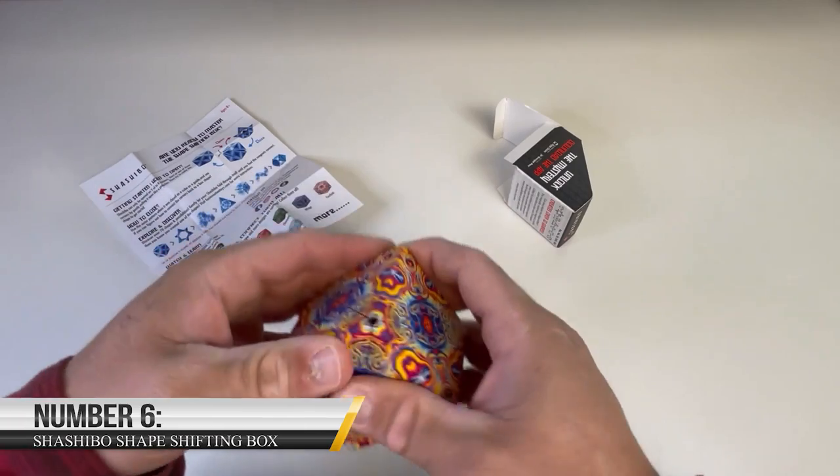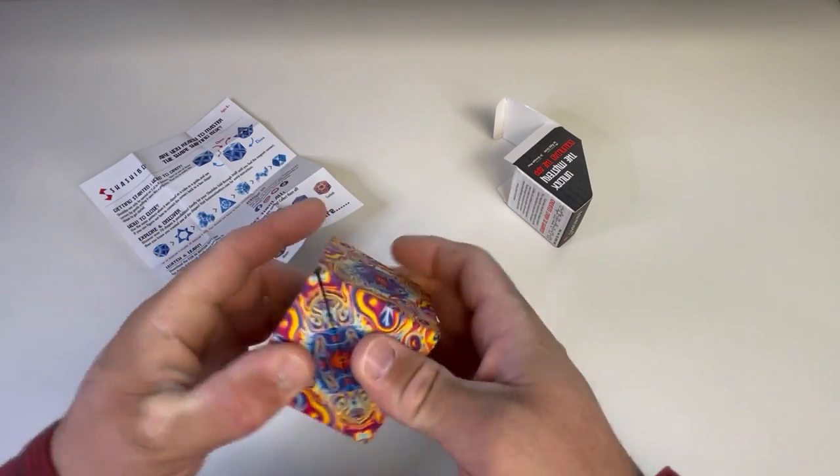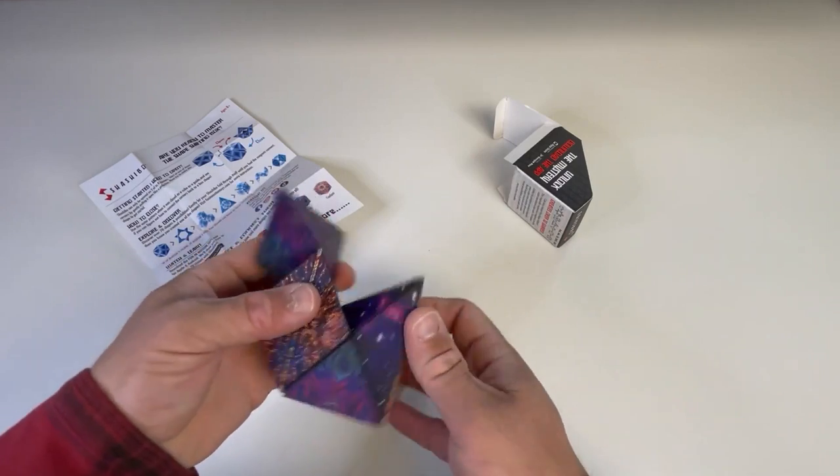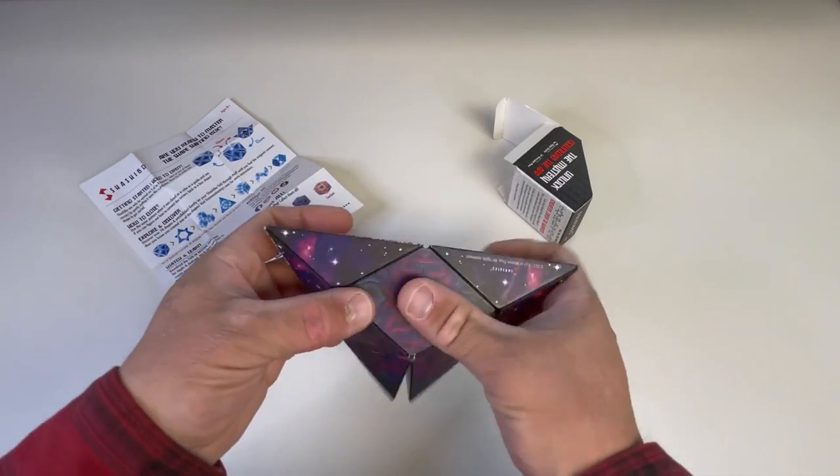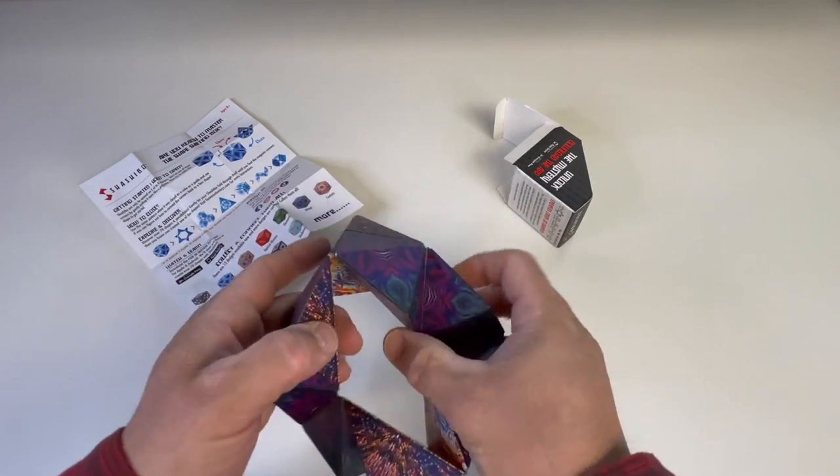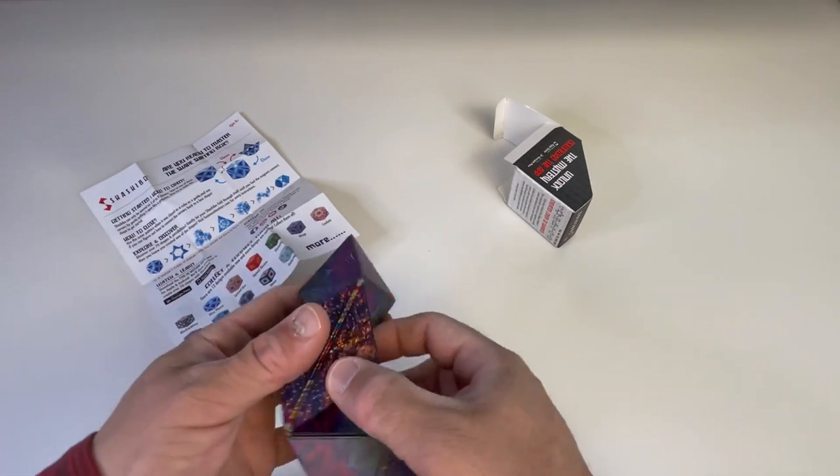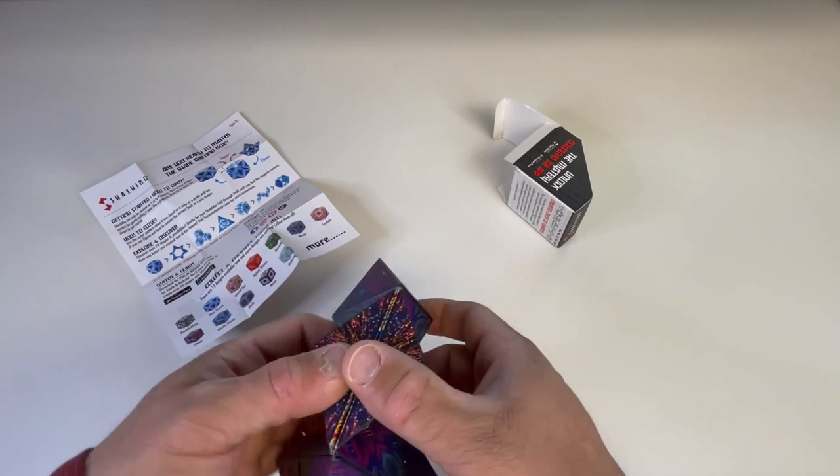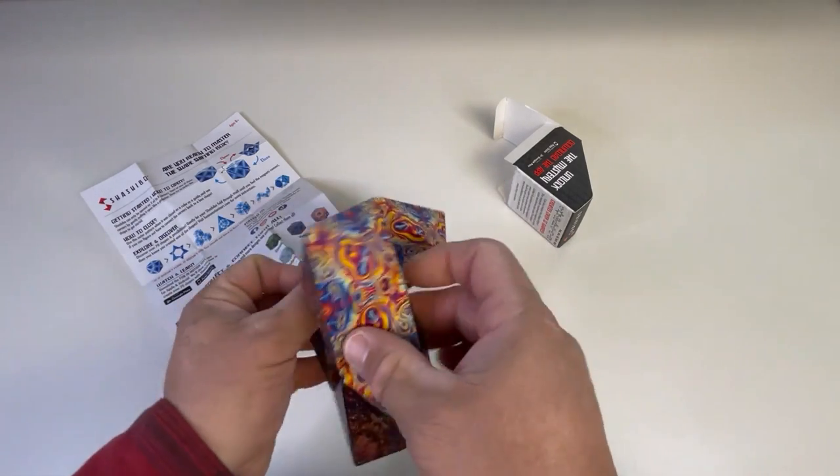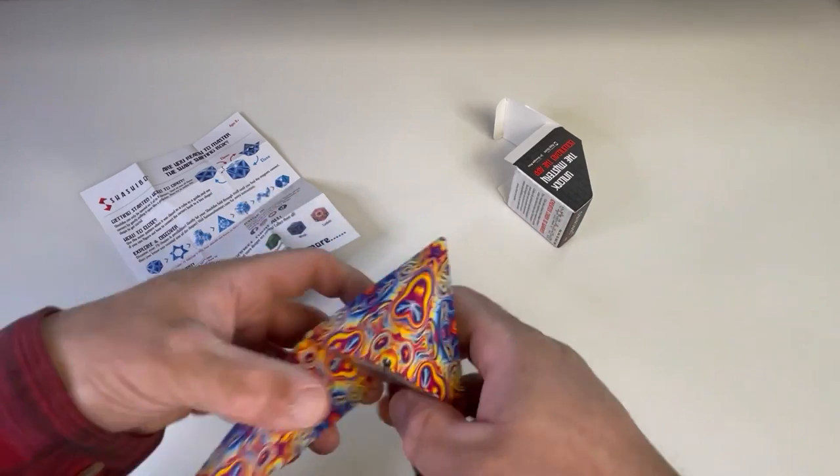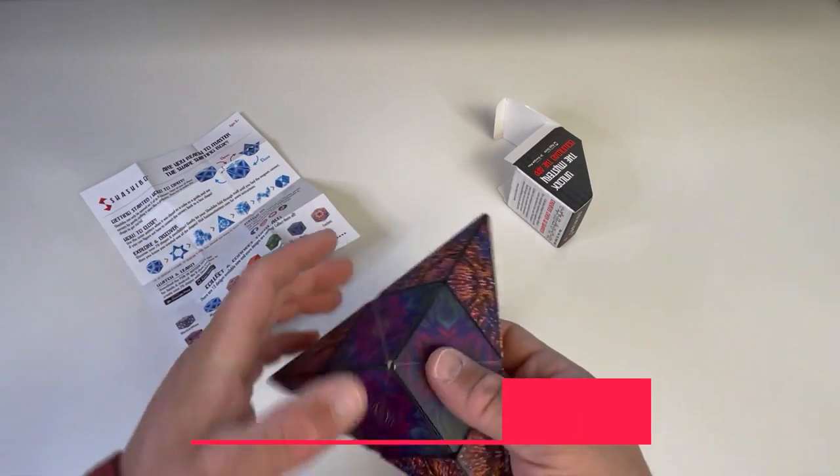Number six: Shishibo Shapeshifting Box. This award-winning box features 36 uncommon earth magnets for an innovative design. The designs can change to more than 80 shapes. The small size of it makes it easy to work on with your hands, spending a long time without feeling bored or aching. This device's quality and excellent design offer mind-challenging activities that stimulate your senses and make you more creative. It sells for $25.